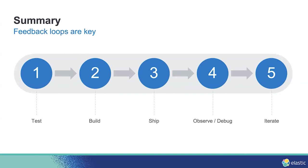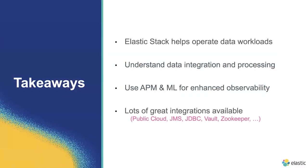Feedback loops have been key for us and they can definitely help you. By testing, building, shipping, observing, and iterating, we're managing to build an excellent data plane which scales well and is easily debugged. The takeaways from this presentation are: the Elastic Stack helps operate data workloads, it understands data integration and processing, and we can use APM and ML for enhanced observability. There are tons of great integrations such as AWS, GCP, JVM-specific integrations like JMS, Vault, Zookeeper, and many more.